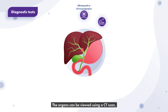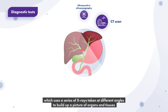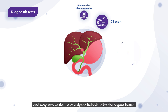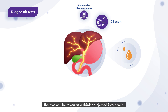The organs can be viewed using a CT scan, which uses a series of X-rays taken at different angles to build up a picture of organs and tissues, and may involve the use of a dye to help visualise the organs better. The dye will be taken as a drink or injected into a vein.